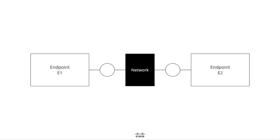In software engineering, a distributed system is an unbounded set of components, from here on out called endpoints. Endpoints communicate by exchanging messages via a network. The behavior of a distributed system is attributed to the behavior of its endpoints and the communication between them. The complexity of a distributed system is attributed to the autonomy of its endpoints and the intricacy of the communication between them. Without loss of generality, let's focus this discussion on two endpoints, E1 and E2.